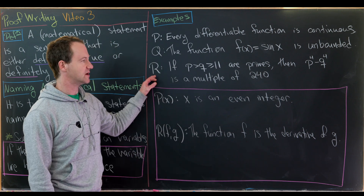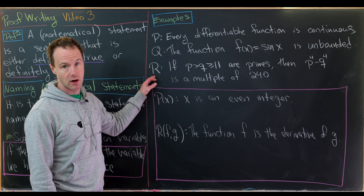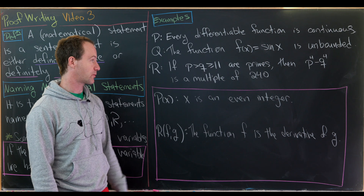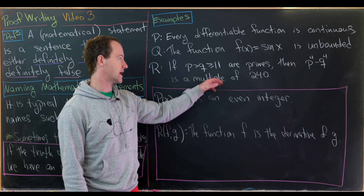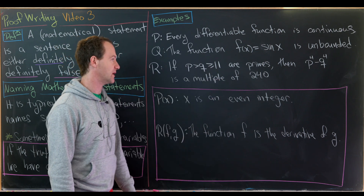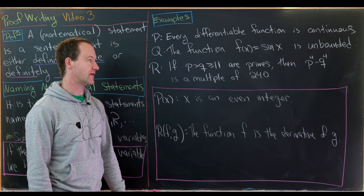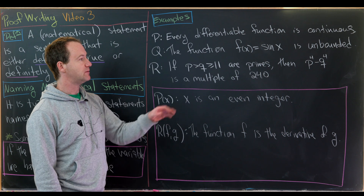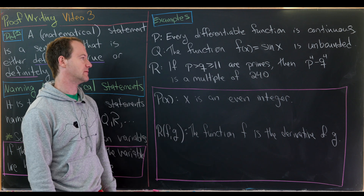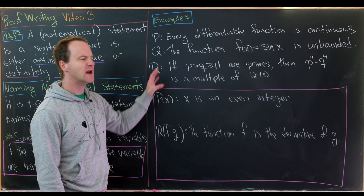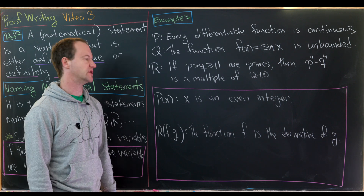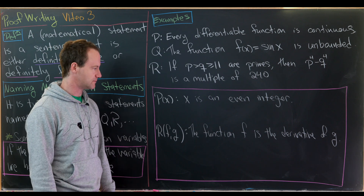Here's another statement r: if p and q are prime numbers with two or more digits (so ≥ 11), then p⁴ − q⁴ is a multiple of 240. This is a nice, fairly elementary number theory problem.